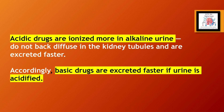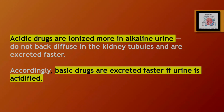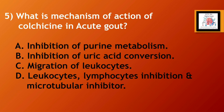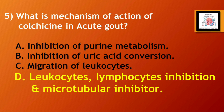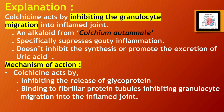Question number 5: what is the mechanism of action of colchicine in acute gout? Option A, inhibition of purine metabolism; Option B, inhibition of uric acid conversion; Option C, migration of leukocytes; Option D, leukocyte-lymphocyte inhibition and microtubular inhibitor. The correct answer is Option D: leukocyte-lymphocyte inhibition and microtubular inhibitor. Colchicine acts by inhibiting granulocyte migration into the inflamed joint, specifically suppressing gouty inflammation. It does not inhibit the synthesis or promote the excretion of uric acid.